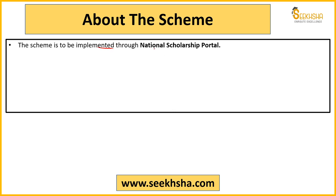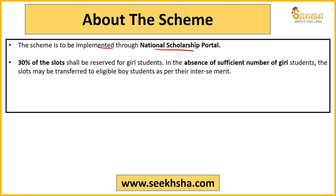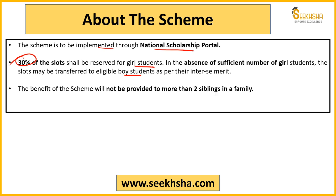This scheme will be implemented through the National Scholarship Portal. One important point to remember: 30% of slots will be reserved for girl students. We are generally used to seeing one-third, but here it is specifically 30%, so don't get confused. If sufficient girl students do not apply to fill the reserved slots, those slots will be transferred to boy students.